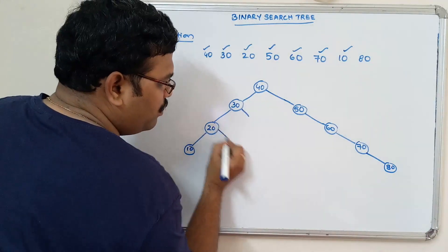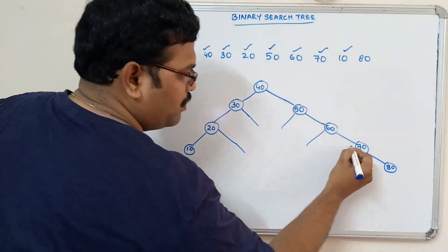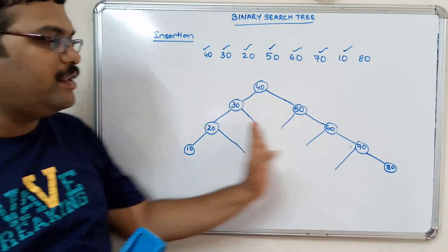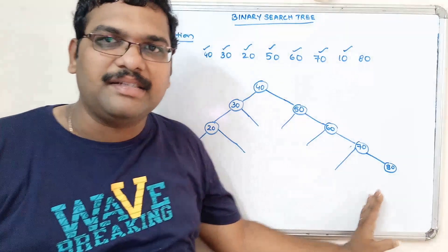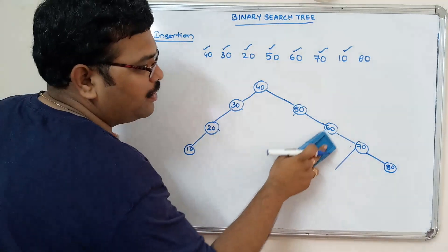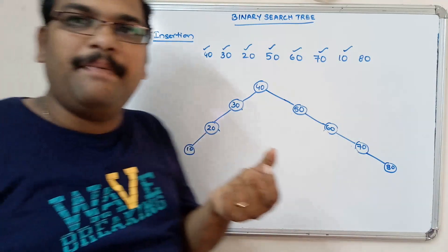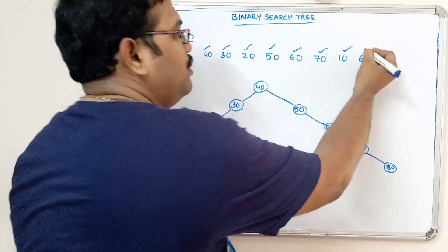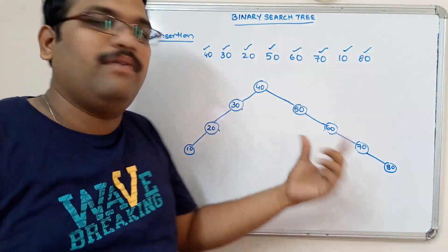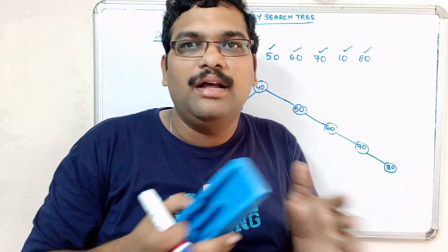There are no right elements in the left subtree and there are no left elements in the right subtree. So by just comparing the element with the root node, we insert that element towards the right position or towards the left position.